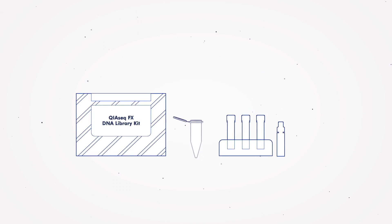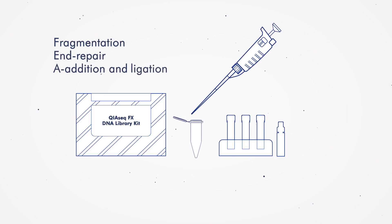How does enzymatic library prep work? By using special buffer conditions, fragmentation, end repair, A-addition, and ligation all happen in a single tube with just two reactions to set up.